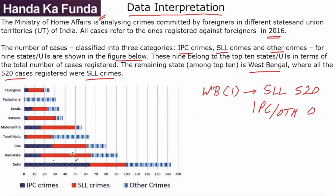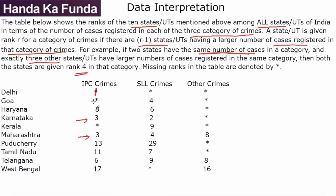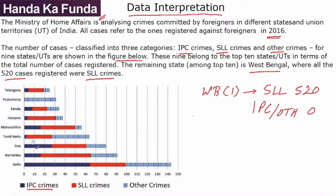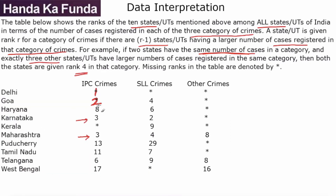In the IPC category, West Bengal has zero so we can ignore that. Delhi looks the biggest in IPC at around 65 odd, and after Delhi I believe it is Goa at around 27 or 28. So Delhi is rank 1 and Goa is rank 2. Then we have Karnataka as well as Maharashtra both around 15 — they appear equal. We don't need exact numbers, just the ranks.